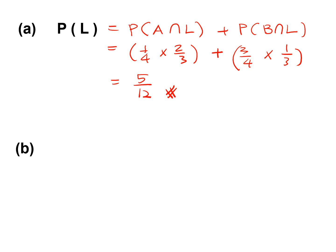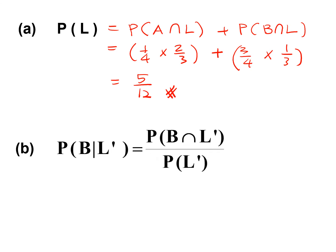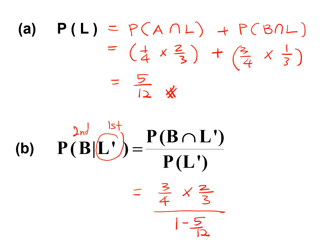For part B, we need the probability that he used Route B given that he is not late. We use the formula P(B intersect L prime) over P(L prime). Looking at the tree diagram, P(B) times P(L prime given B) is 3 over 4 times 2 over 3. And P(L prime) is 1 minus 5 over 12, which is 7 over 12. So finally, you get 6 over 7.